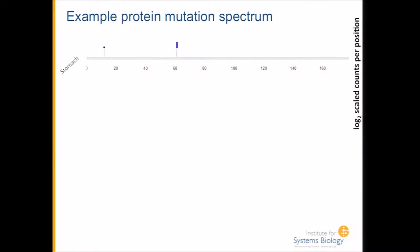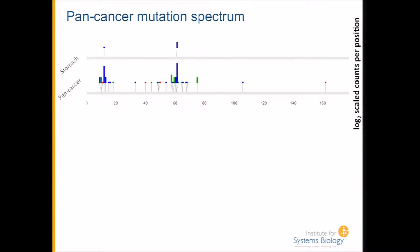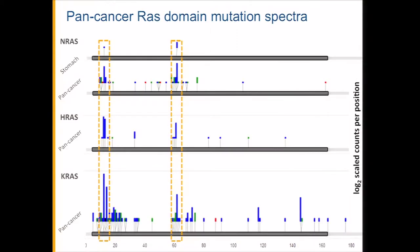An example from stomach cancer shows three samples with mutations in two different positions within a protein. From this alone, you wouldn't necessarily expect it to be concerning, but if you start considering data from multiple tumors, a profile starts to emerge. Knowing that this is NRAS, and that its homologs HRAS and KRAS have similar mutation profiles, we become increasingly convinced that these mutations are at functionally important positions and would be deleterious.